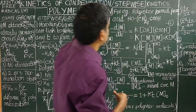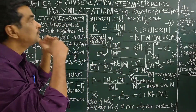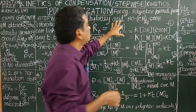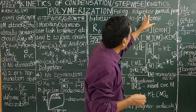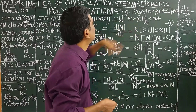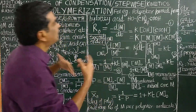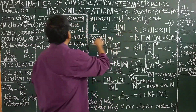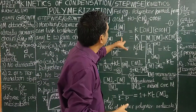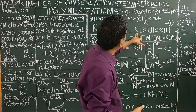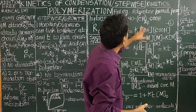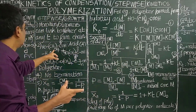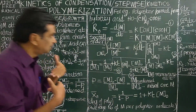Let us now study the kinetics and derive the rate of condensation polymerization reaction. For example, polyester is formed from hydroxy-carboxylic acid. The overall rate of condensation polymerization reaction equals the rate of disappearance of monomer, which equals the second-order rate constant k times the concentration of OH times the concentration of COOH, because both functional groups are involved in the condensation reaction to form the polymer chain.